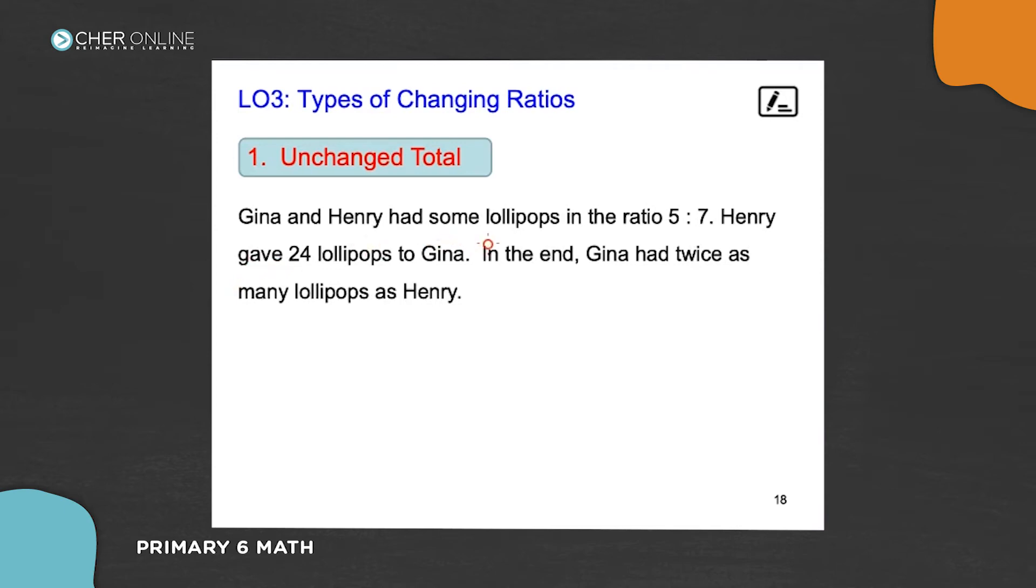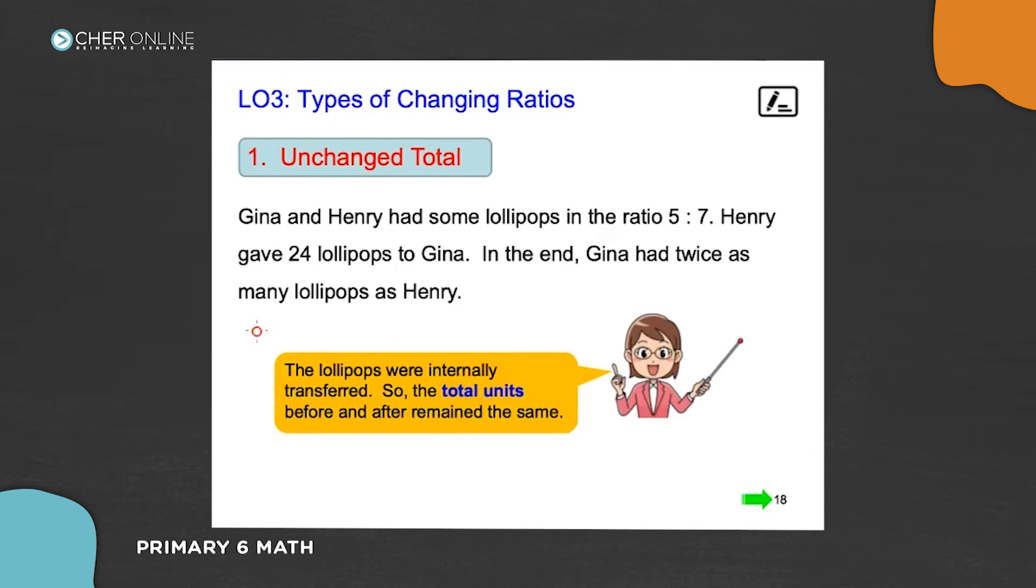Gina and Henry had some lollipops in the ratio five to seven. Henry gave 24 lollipops to Gina. In the end, Gina had twice as many lollipops as Henry. So, in this case, the lollipops were actually internally transferred. Internally transferred means between the two of them, they just passed to one another. So, in this case, Henry is the one who gave to Gina. Does the total change? The total does not change. So, no matter what you do, if you are internally exchanging or transferring, the total units before and after will remain the same. This is what they mean by unchanged total or internal transfer.